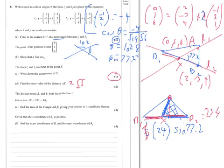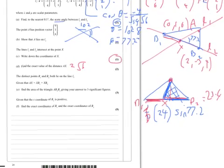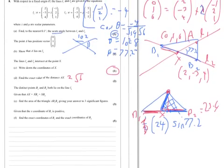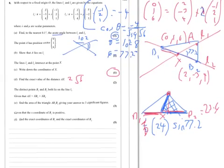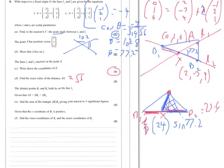Given that the X coordinate of B1 is positive, find the exact coordinates of B1 and the exact coordinates of B2. What we know is we know the distance from A to X. We found it earlier as 2 root 6. That's this value here. 2 root 6 from A to X. So it's also 2 root 6 along here and 2 root 6 back along there.